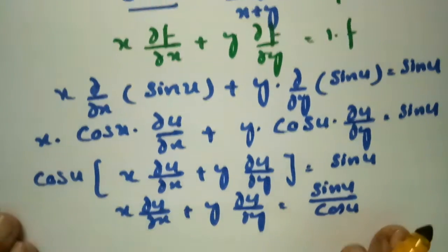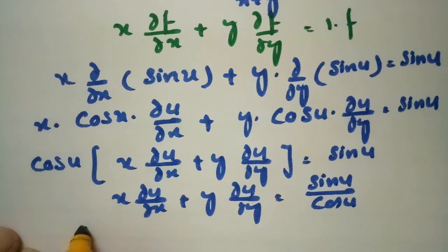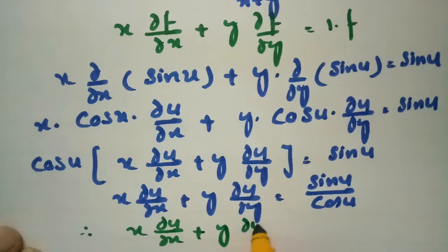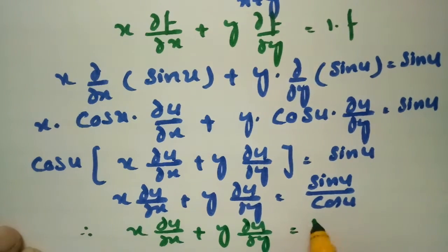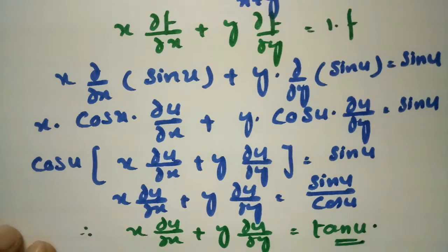Therefore it is very clear that x·∂u/∂x + y·∂u/∂y = tan u. This is what we had to show.